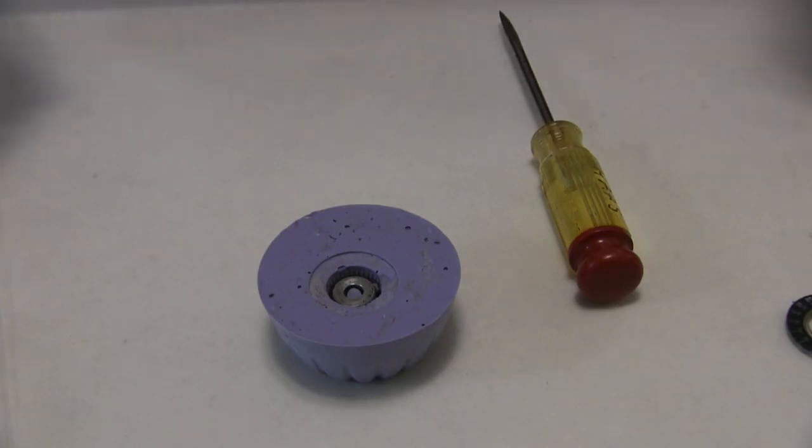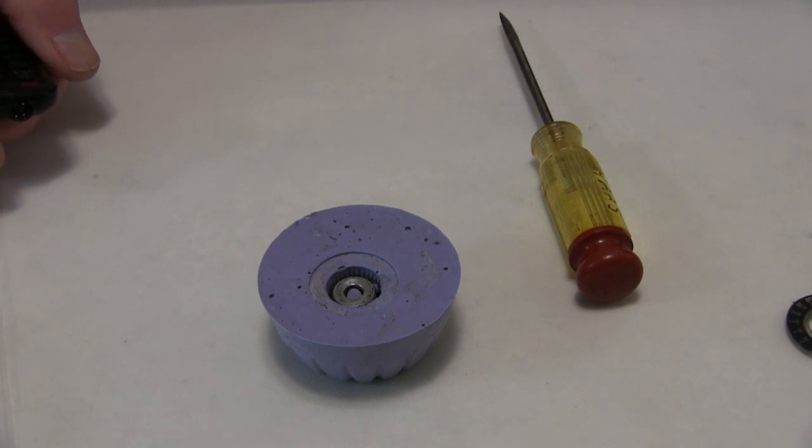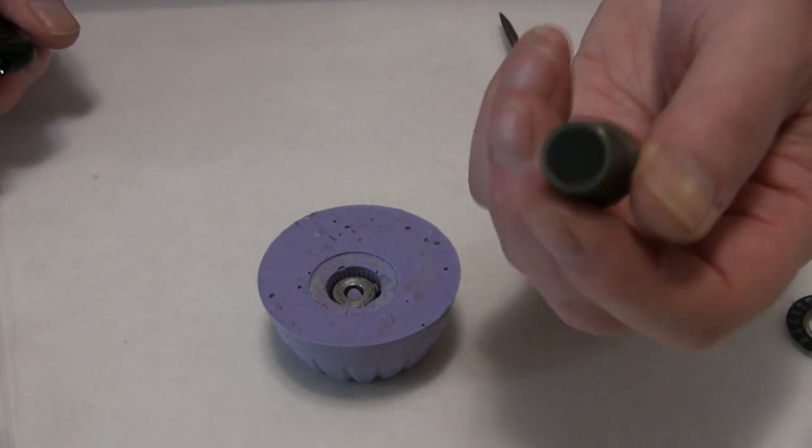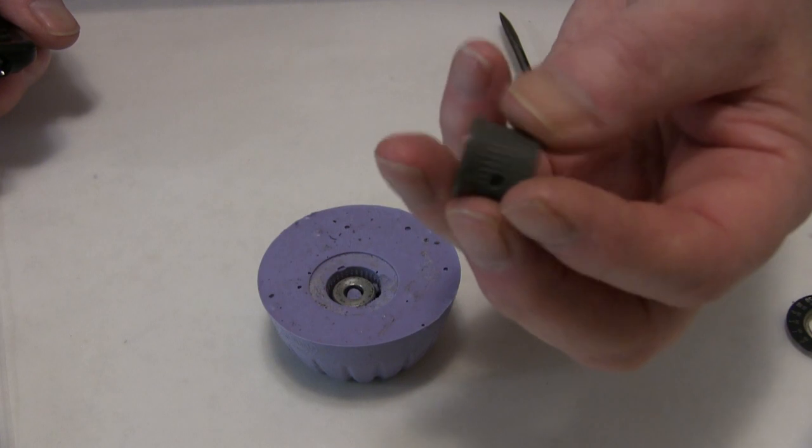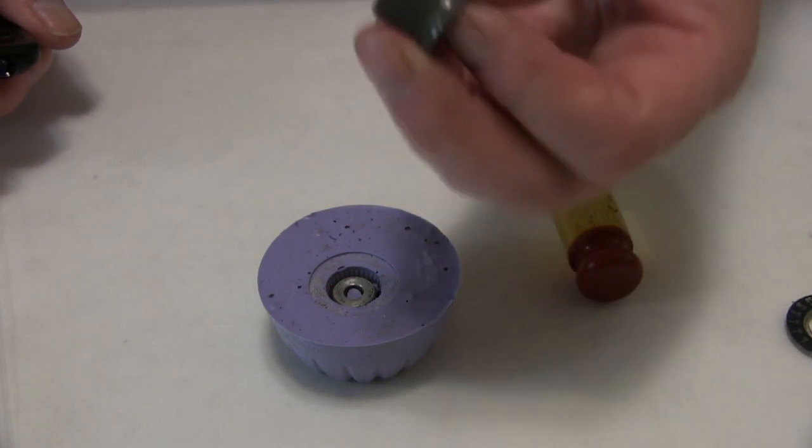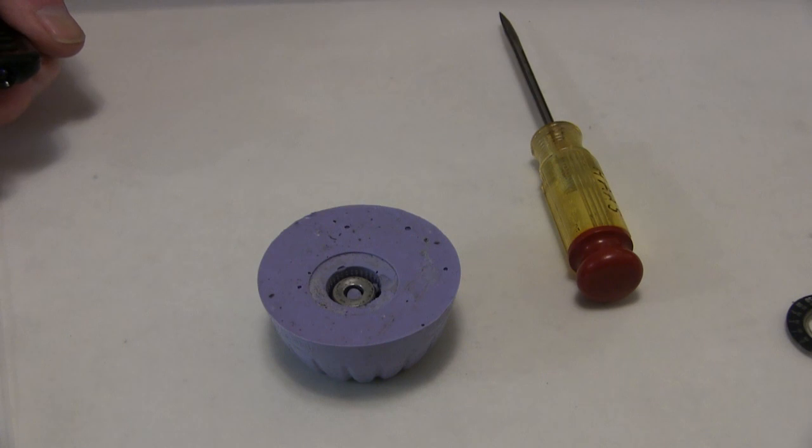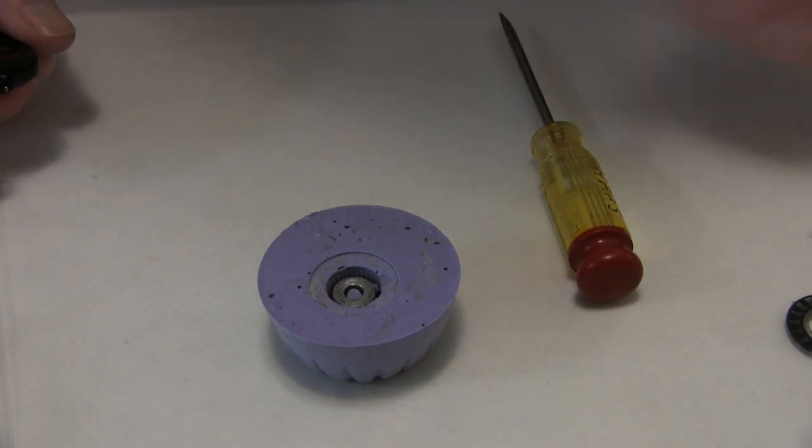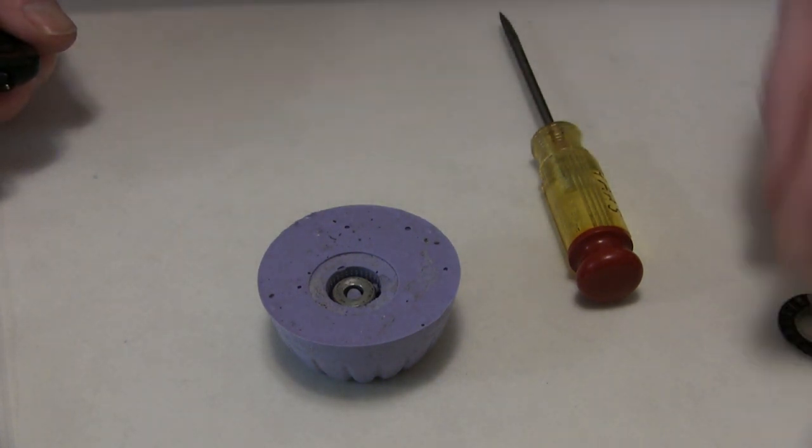By the way, the museum does have a collection of knobs, non-skirted type knobs. If you're looking for replacements, you can contact the museum. And a few skirted knobs for specialized instruments, but largely we have very few of these skirted knobs.